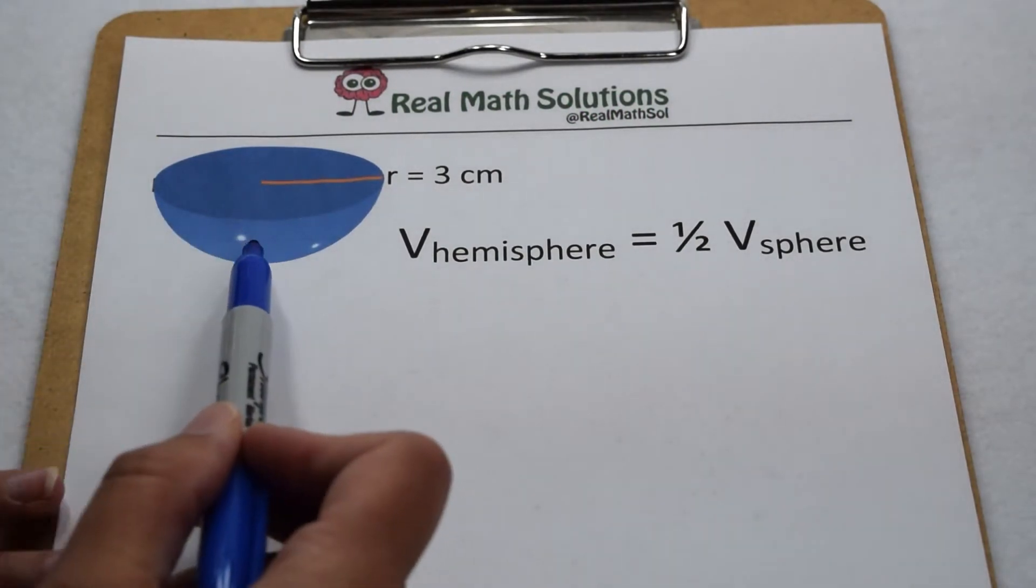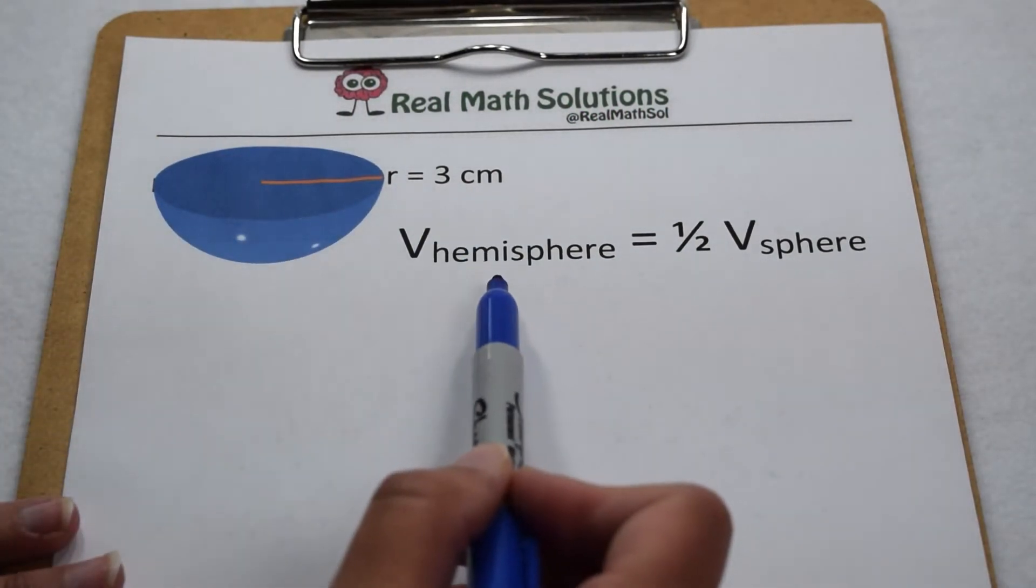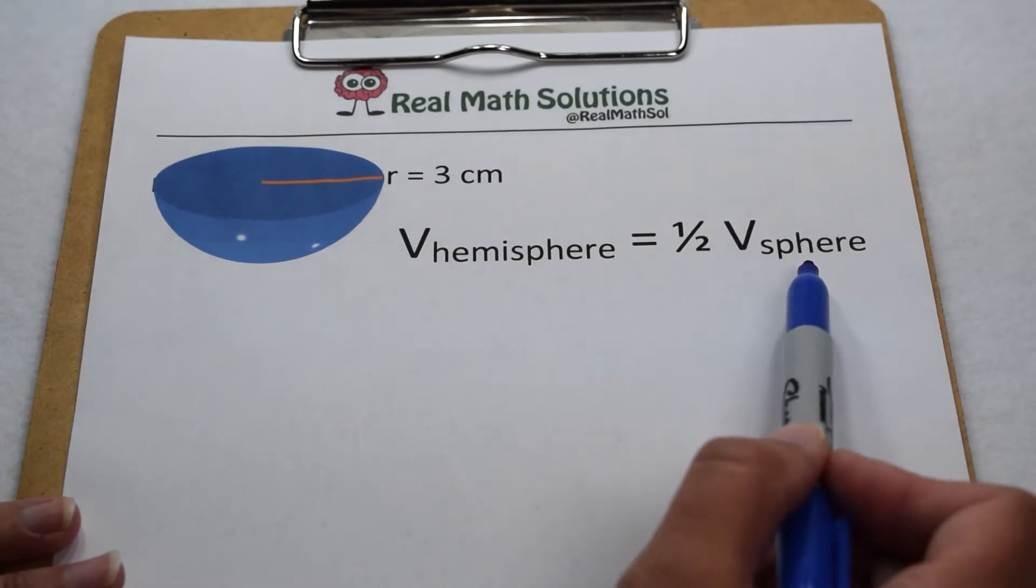A hemisphere is a three-dimensional figure that's half a sphere. This means the volume of a hemisphere is going to be worth half the volume of a sphere with the same dimensions.